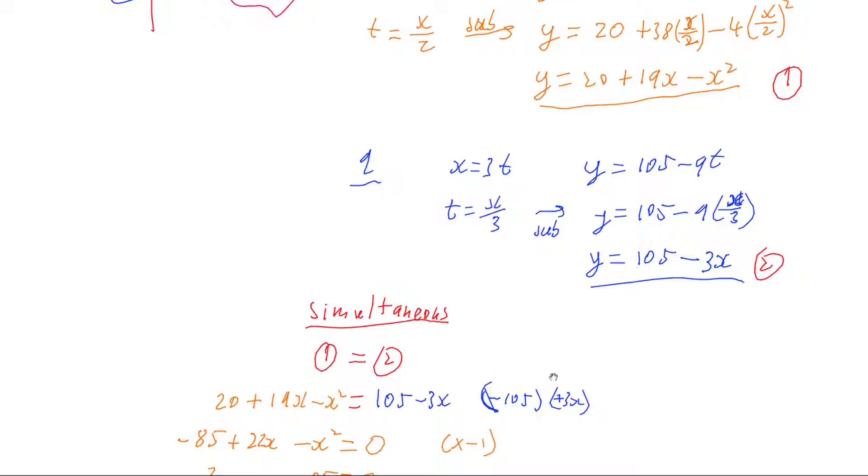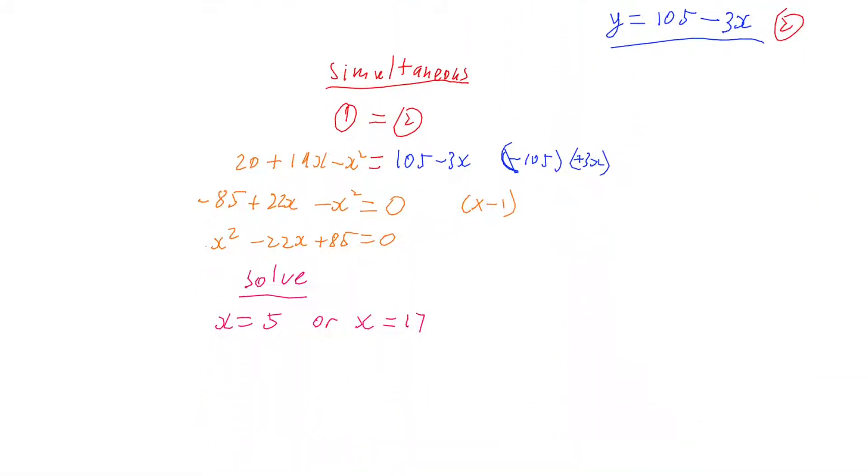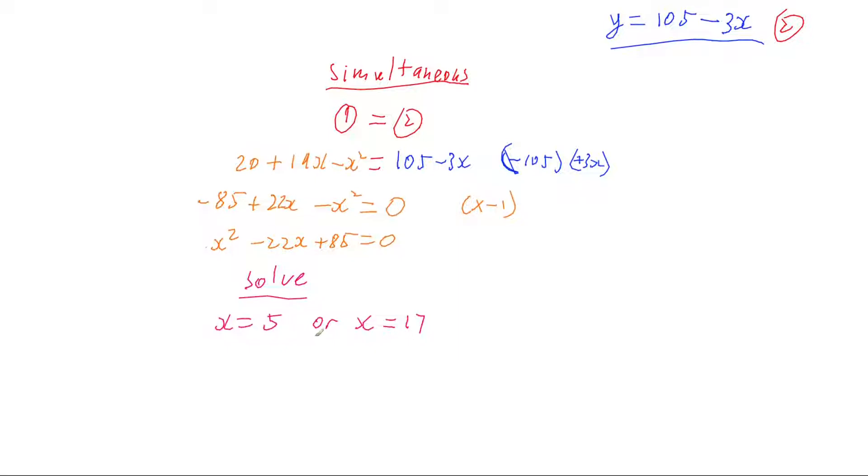This one is easy to work with, so when x equals 5 we're going to have y equals 105 minus 3 times 5 which gives us y equals 90, and when x equals 17, y is going to be 105 minus 3 times 17 and that's going to give us y equals 54.